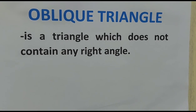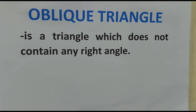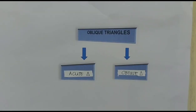So let us define first what is an oblique triangle. An oblique triangle is a triangle which does not contain any right angle — it is a triangle with no right angle. The triangles considered as oblique triangles are acute triangles and obtuse triangles.